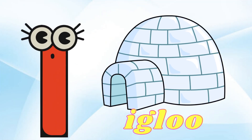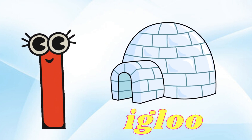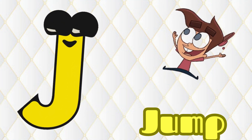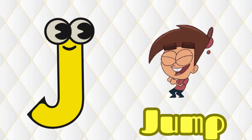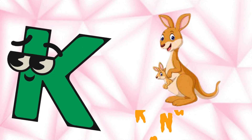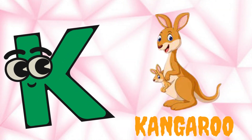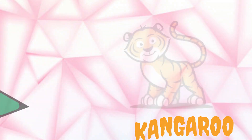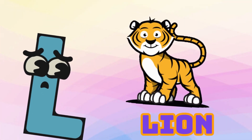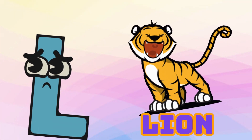I is for Igloo, I-I-Igloo. J is for Jump, J-J-Jump. K is for Kangaroo, K-K-Kangaroo. L is for Lion, L-L-Lion.